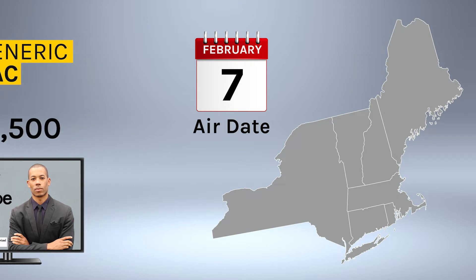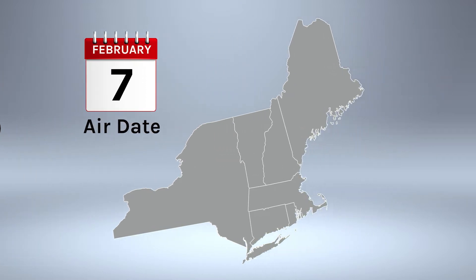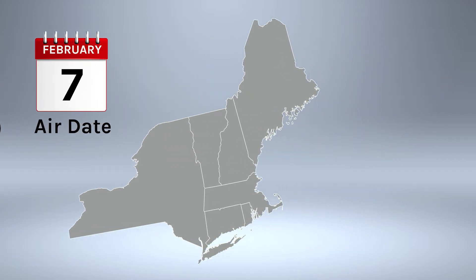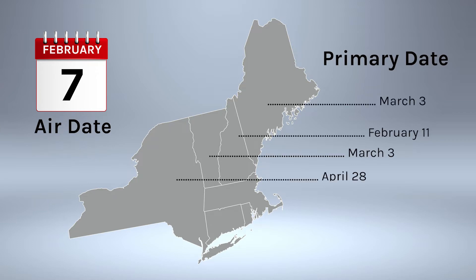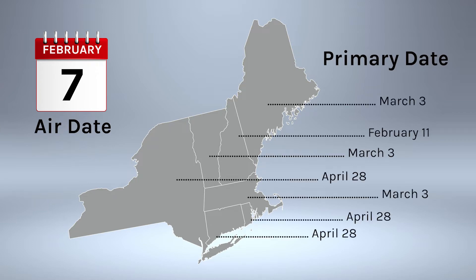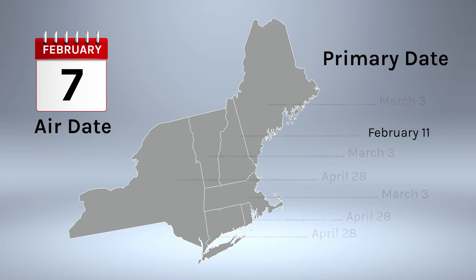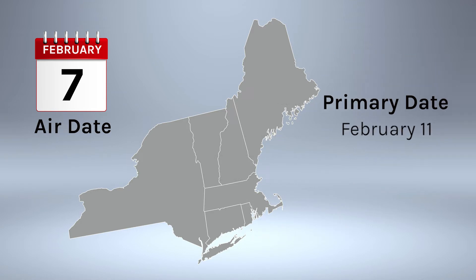Having triggered the new rules, the PAC must determine which of those states has the next primary and file based on the reporting dates for that election. In this example, New Hampshire has the next primary, February 11th.